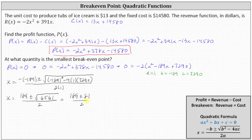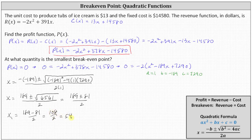Notice we do have two solutions here, but we're looking for at what quantity is the smallest break-even point, meaning we're looking for the smallest value of x. Let's go ahead and find both solutions though. x sub one is equal to the smaller value of 189 minus 81 divided by two, which gives us 108 divided by two, which is 54. And the larger solution x sub two is equal to 189 plus 81 divided by two, which equals 270 divided by two, which is equal to 135.